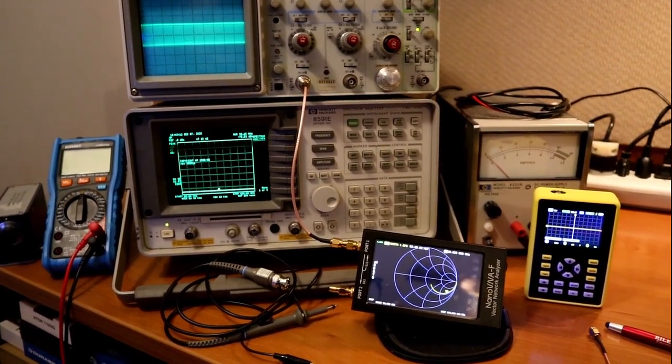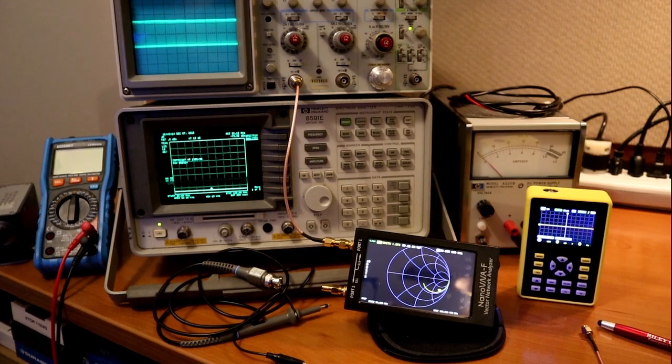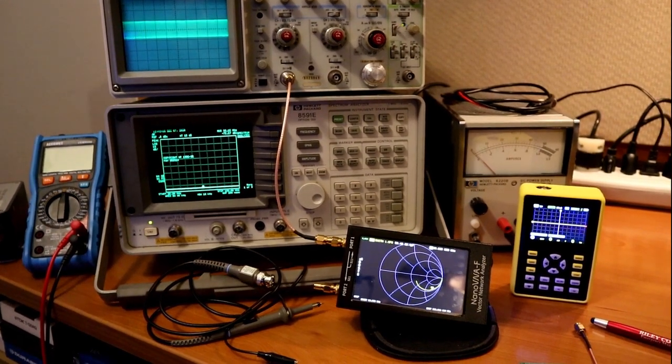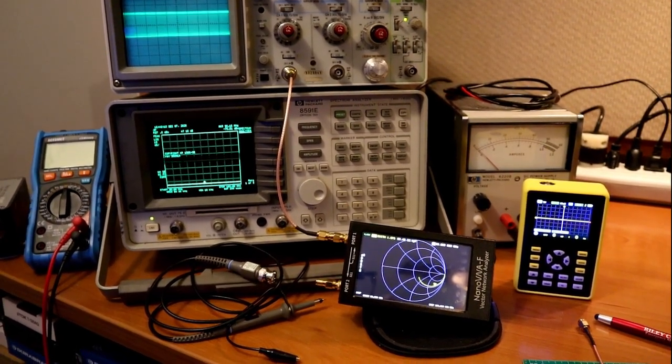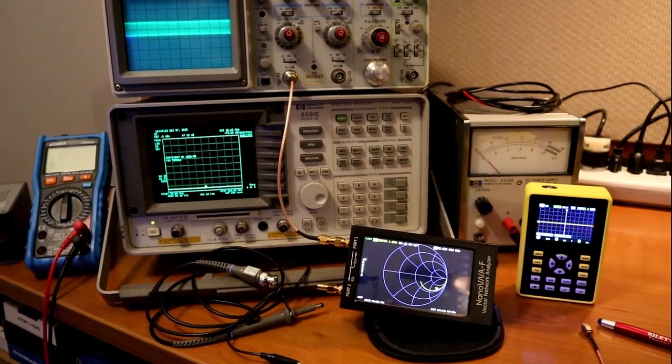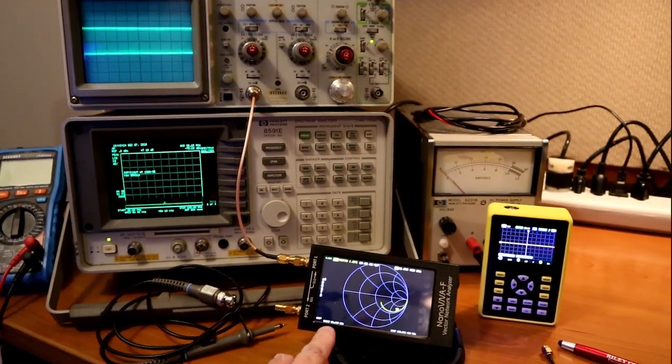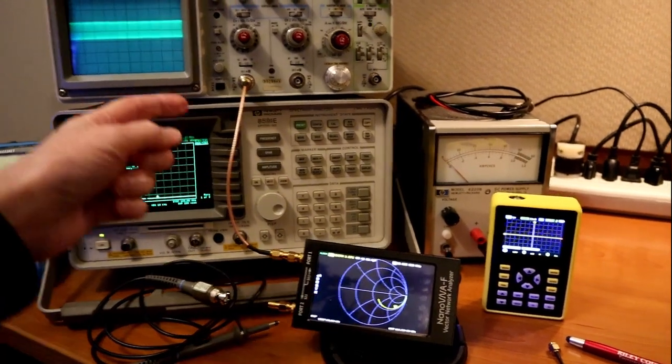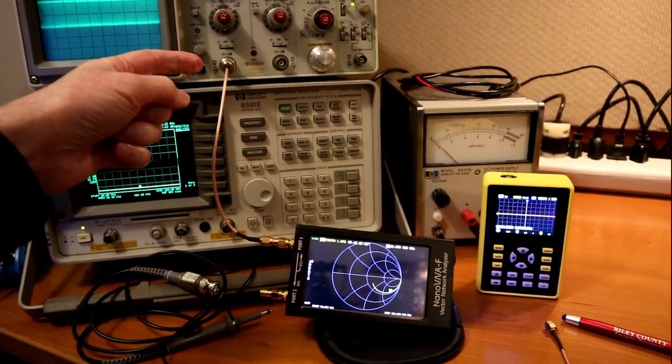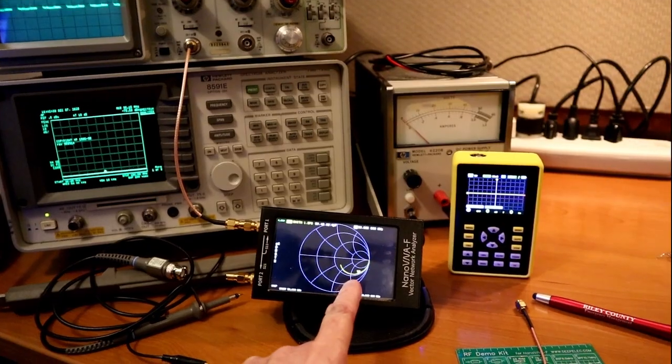So here's a really cool thing you can do with your nanoVNA if you've got one of these things, or if you've got a regular vector network analyzer. What we have is the vector network analyzer, the nanoVNA, hooked up to the input of an oscilloscope, and it's reading the input impedance of the scope.